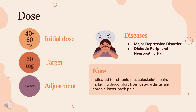Generalized Anxiety Disorder (GAD) — for patients under 65 years: 60 mg PO once daily initially. Consider starting at 30 mg once daily for one week to allow for therapy adjustment before increasing to 60 mg once daily. Target dosage is 60 mg per day. May increase in increments of 30 mg once daily, not to exceed 120 mg per day. No additional benefit has been shown with doses greater than 60 mg per day.